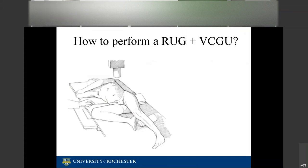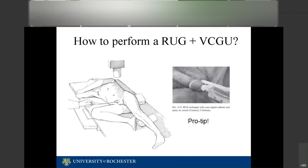One technique uses an 8-French Foley catheter inserted into the urethral meatus with about 5 cc's in the balloon, then contrast injected through it. Another approach: place a small piece of gauze around the corona, gently pull the penis toward you, and use a 60 cc catheter-tip syringe with no more than 30 cc's to inject contrast.